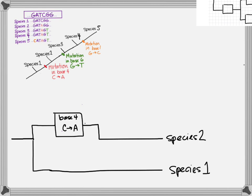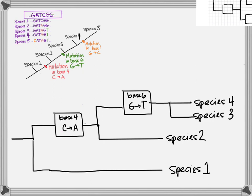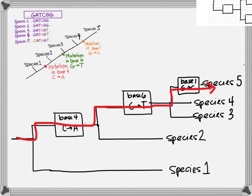Well, everybody else has that mutation too, but they have other mutations. So species 3 and 4 also have a mutation in base 6 — it went from a G to a T. That's the last mutation they have, so we can go ahead and just show them. But species 5 has one more mutation. So we write in the base 1 change from G to C and put species 5 there. This is very much like the PBS Nova game. We can actually count how many boxes a species line travels through — one, two, three — meaning that species has got three mutations.